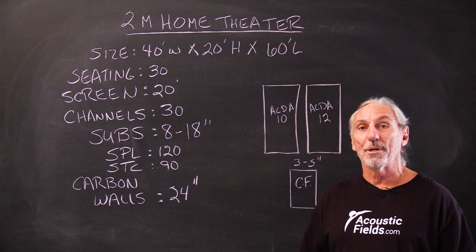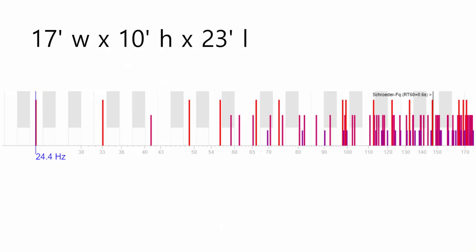But first off, let's just have a little fun and do a comparison. This graphic that I'm going to show you right now is a standard size room that's 17 by 10 by 23, the standard control room size that we use. Let's not worry about the axial, tangential and oblique modes. Let's just look at all the lines on the graph.